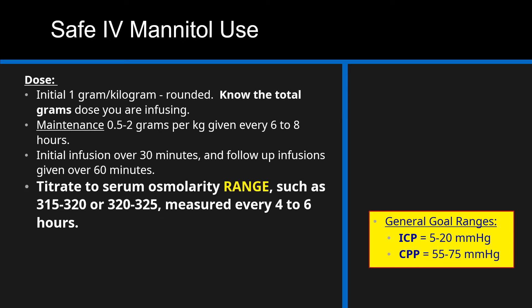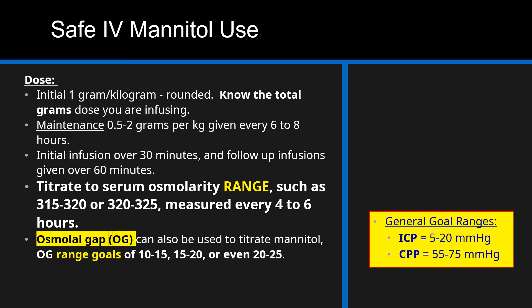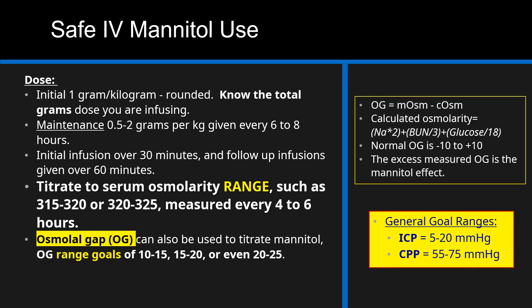Titrate to serum osmolarity range, such as 315 to 320 or 320 to 325, which should be measured every 4 to 6 hours. Mannitol can also be titrated to the osmolar gap, which is the measured osmolarity in the lab minus the calculated osmolarity. The calculated osmolarity equals serum sodium multiplied by 2, plus BUN divided by 3, plus glucose divided by 18. Normal osmolar gap is negative 10 to positive 10. The excess measured osmolar gap above the normal range is the mannitol effect.